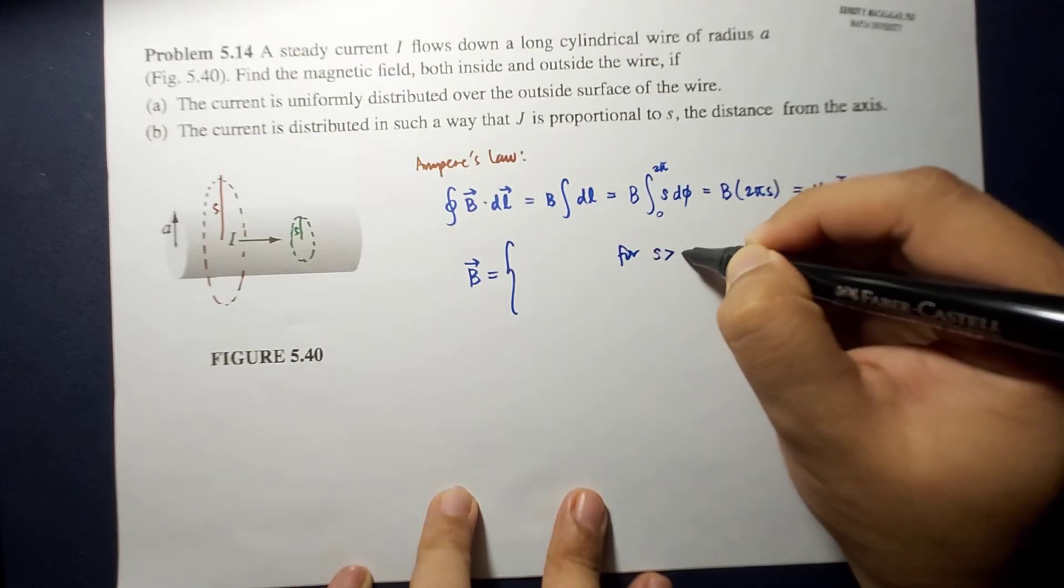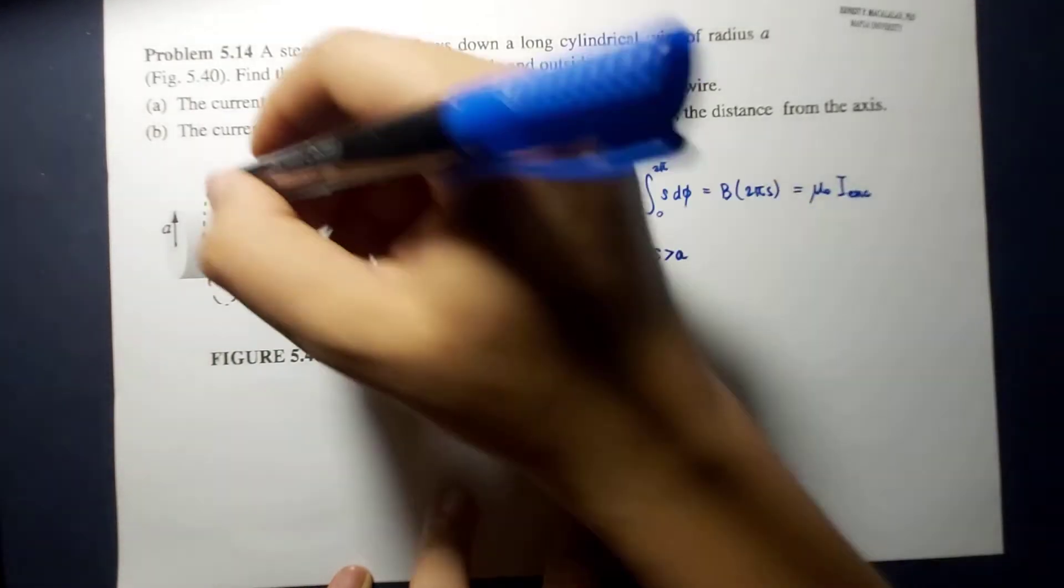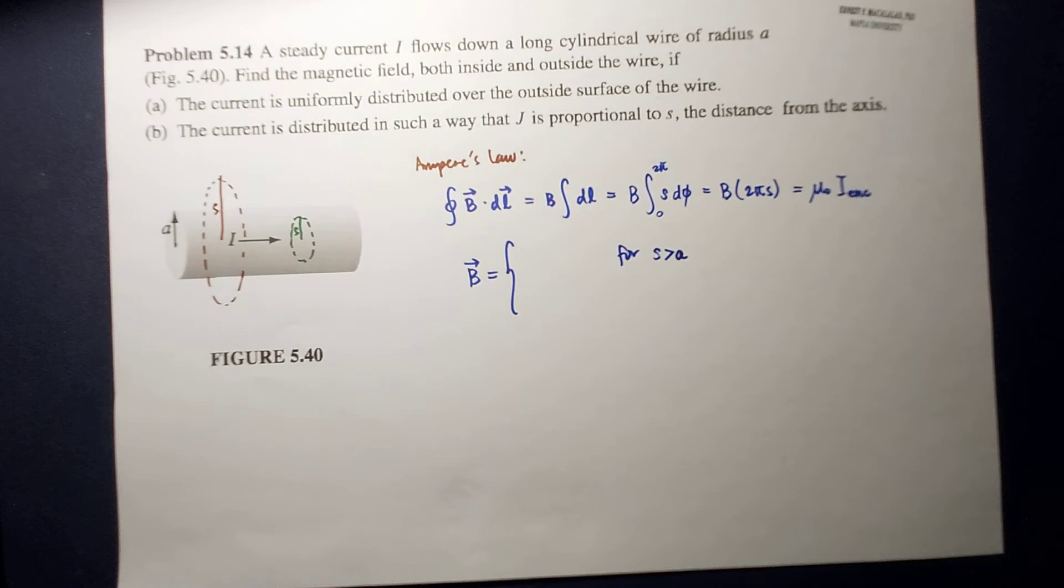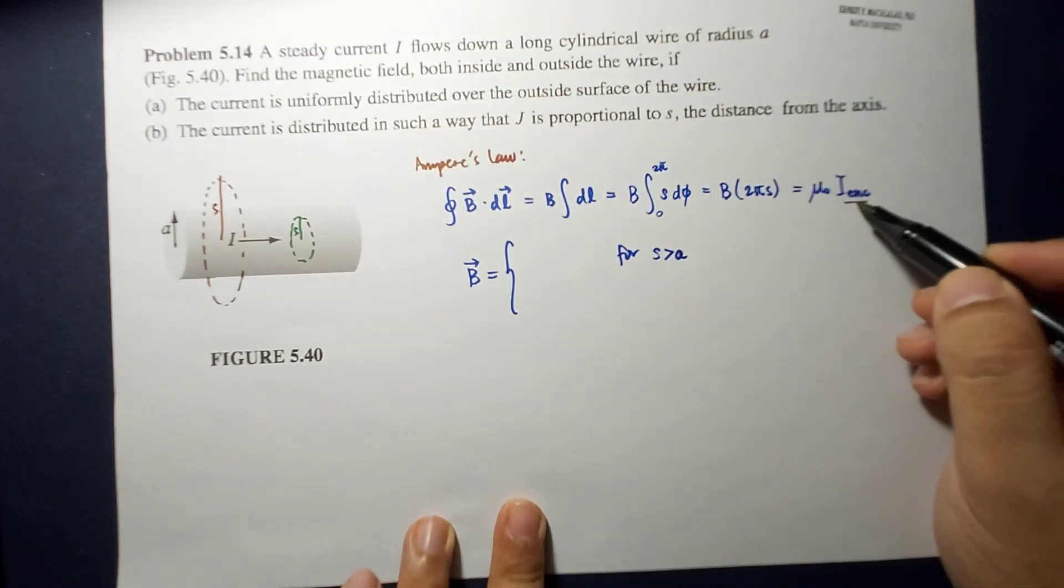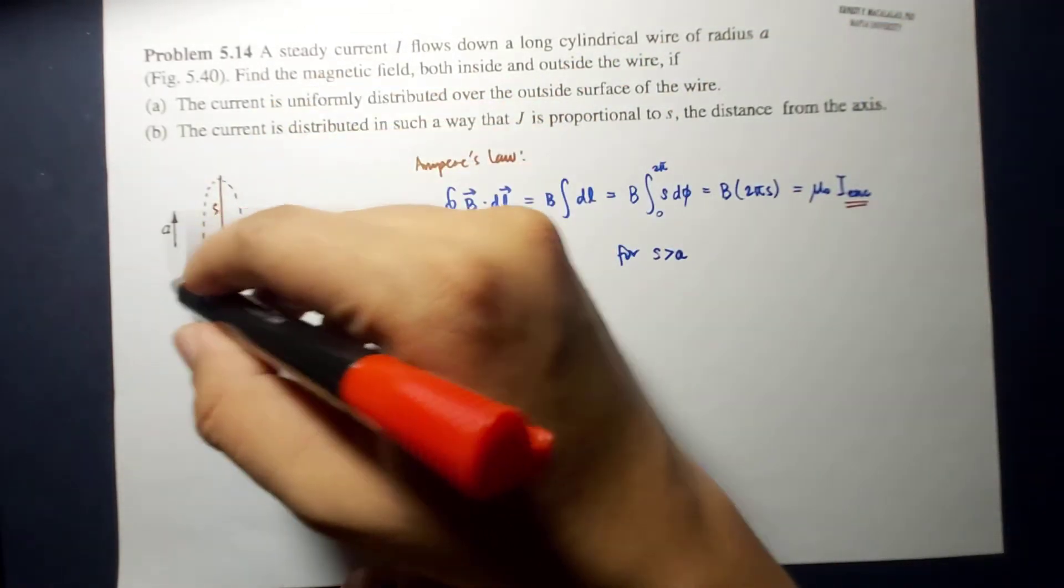For S greater than A, so this is the red one. For S greater than A, remember that the total I enclosed by this Amperian loop will be the total I.